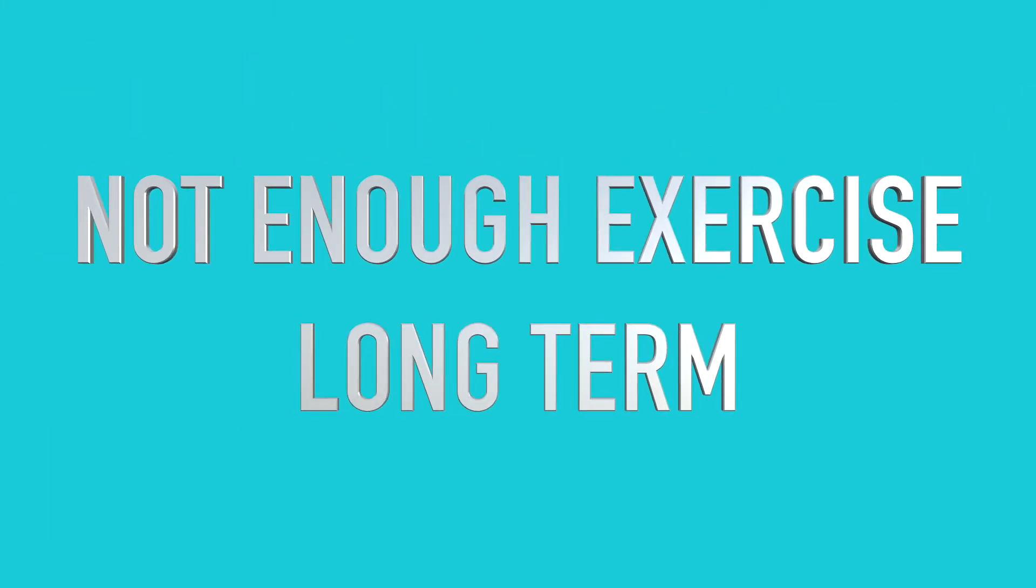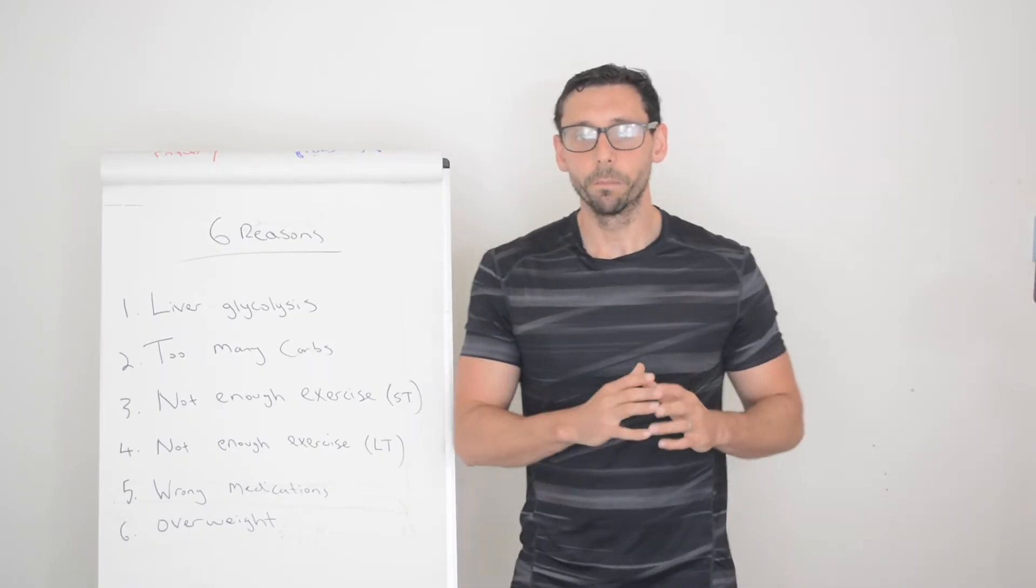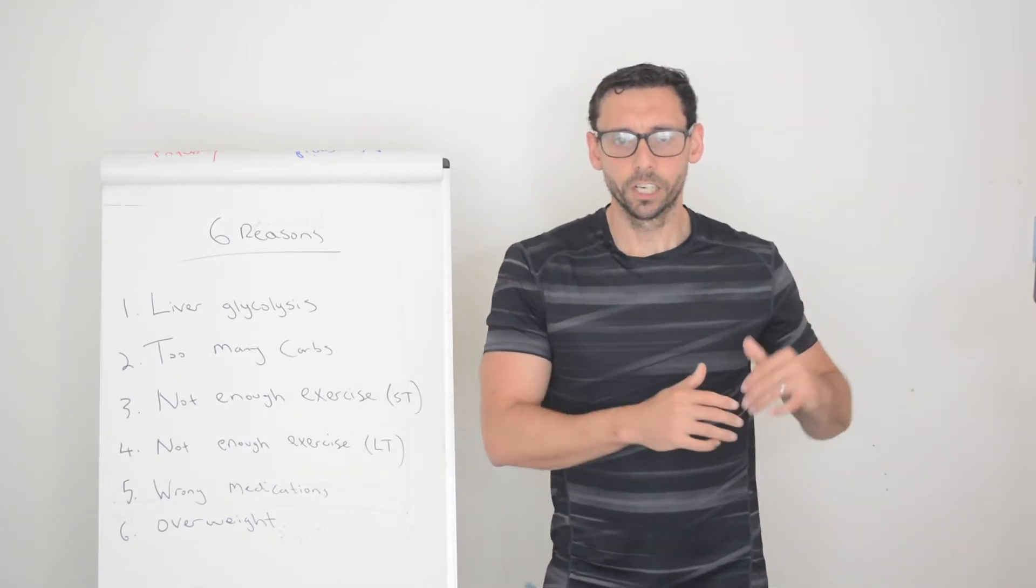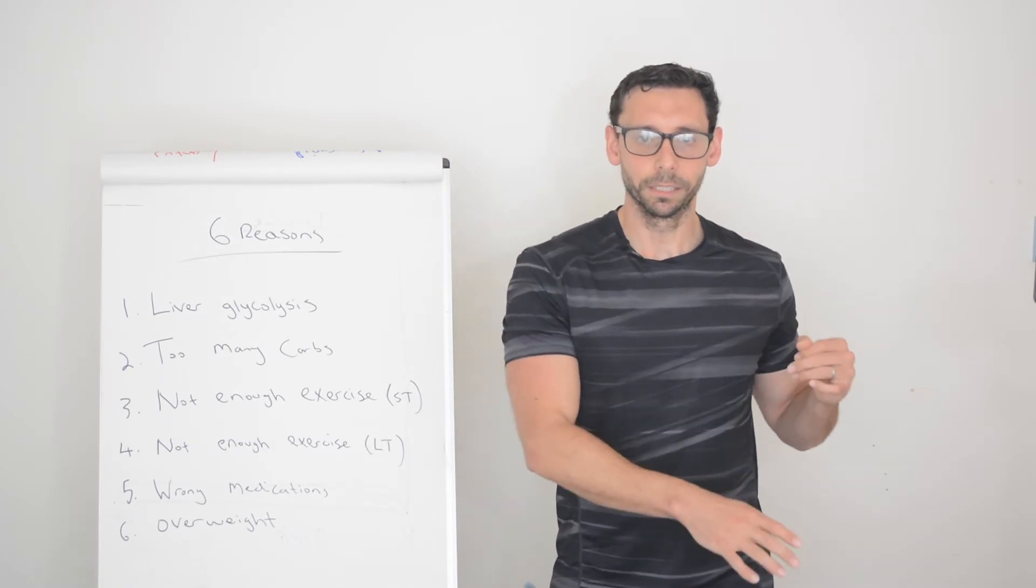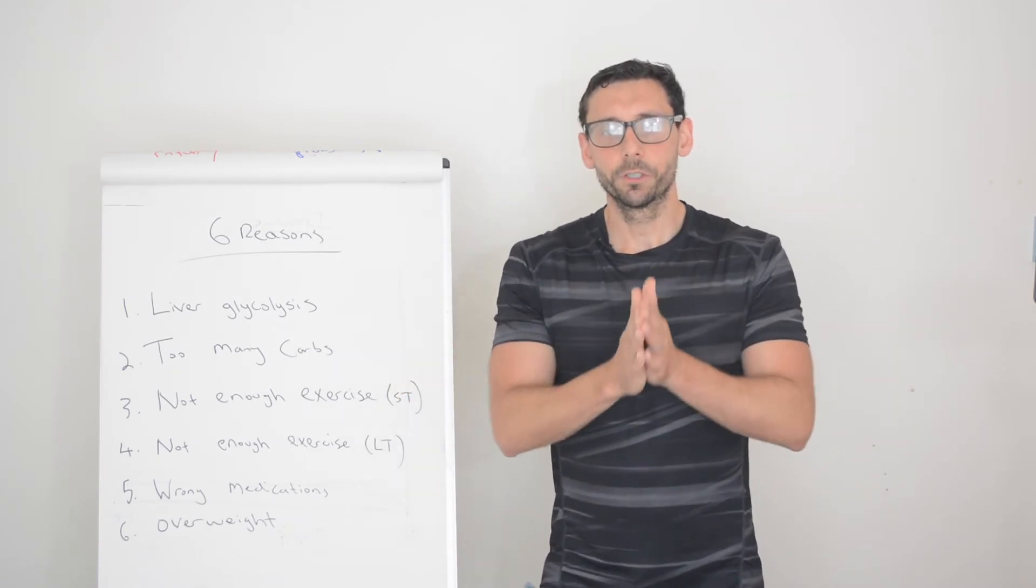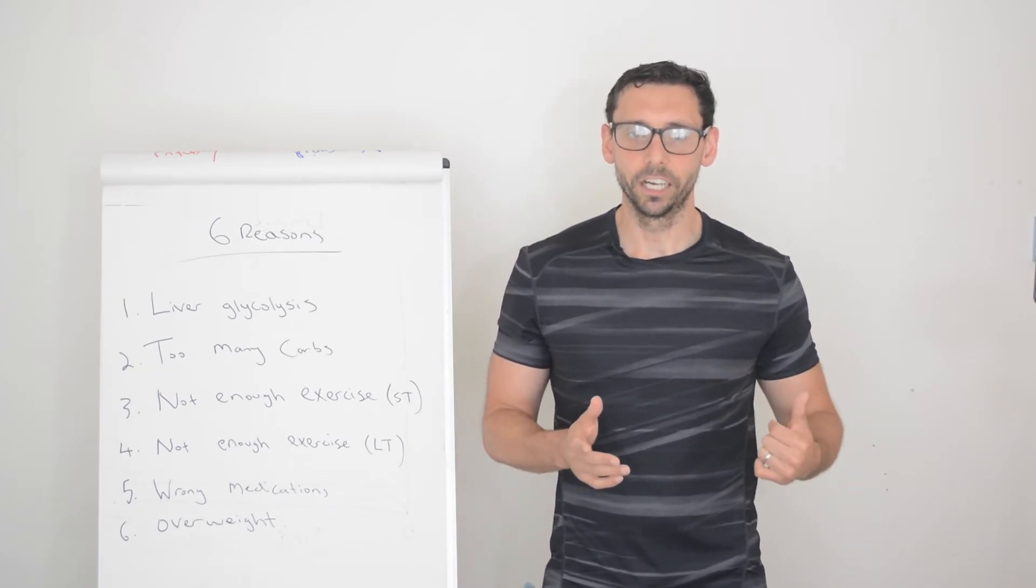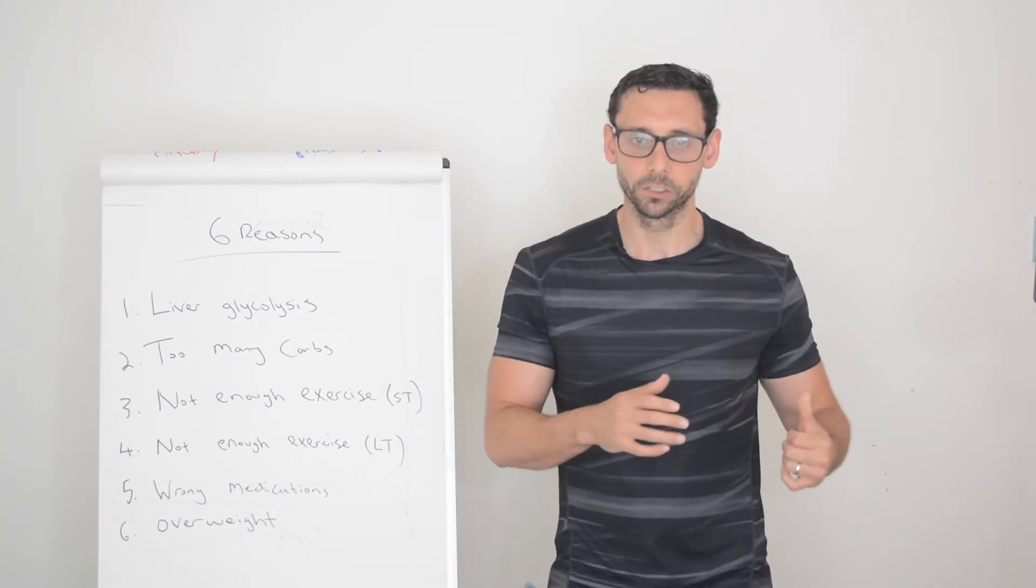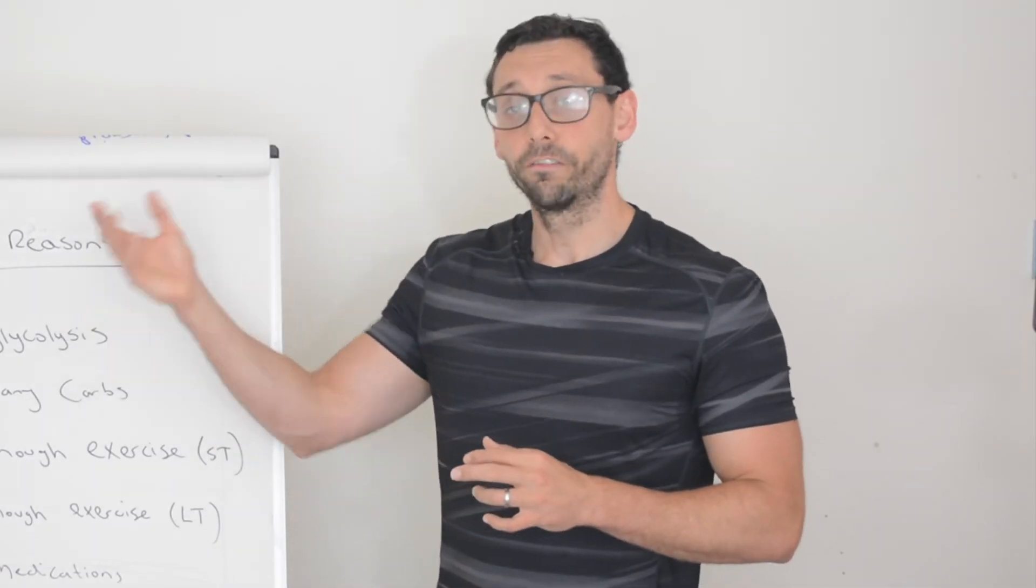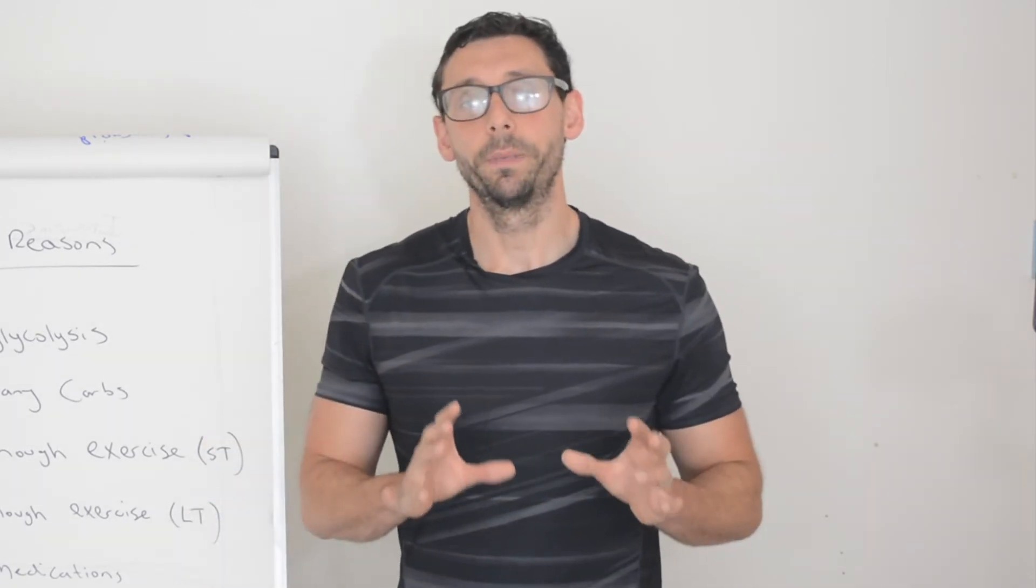Number four, not enough exercise long term. Number four obviously sounds the same as number three but it's not, because now we're looking long term. Short term you're burning up glucose and that's fantastic, it's going to help keep the glucose levels lower. Longer term though, if you're able to exercise regularly, it gives you a bigger margin in your diet so you're not having to constantly restrict calories and swim against the tide to achieve lower glucose levels and weight loss. It gives you all the benefits of number three in terms of liver fat breakup and a better foundation, but also longer term it gives you a bigger chance of winning.